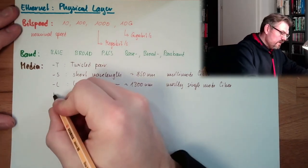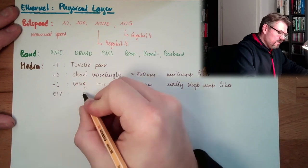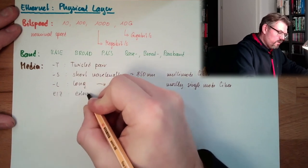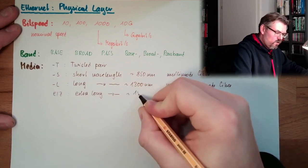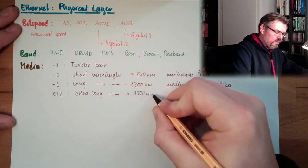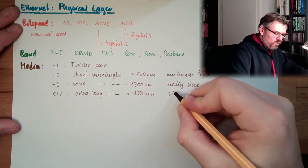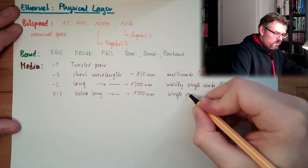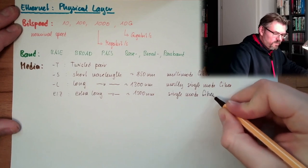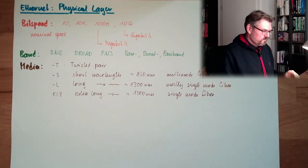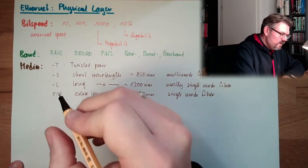Multi-mode fiber means more than one wavelength can propagate through this fiber. And single mode fiber means only a specific wavelength can propagate through, and all others are somehow lowered. And then there is EZ, this is extra long wavelengths, this is around 1500 nanometers, and this is single mode fiber.